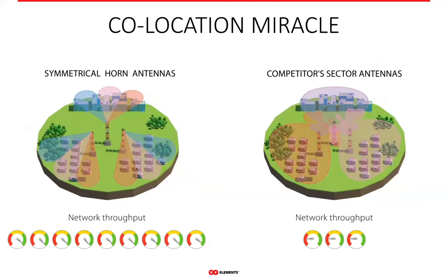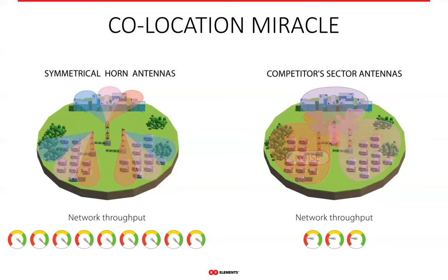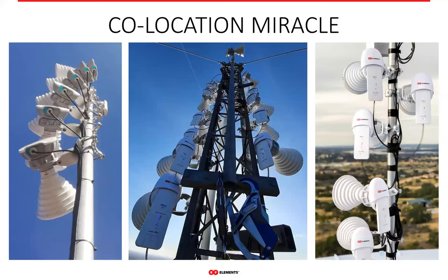Collocating increasing numbers of patch array sectors is always problematic — you see a gradual decline of network throughput and stability until even a single additional sector kills the site completely. With horns, this problem is practically non-existent. The zero side lobe radiation pattern enables predictable dense collocations without any degradation of network performance. Since they don't have any side lobes, they don't collect or transmit noise in their surroundings. Many sectors on one site are only possible when using horns — no traditional sector will let you do this kind of deployment.